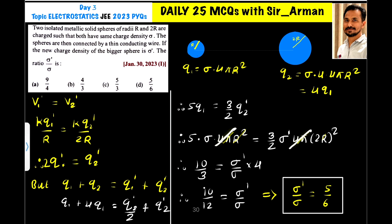This 4π will get cancelled here. Sigma dash as it is, this sigma I am bringing towards right side, so it is sigma dash by sigma. And here 2 into 2 means 2² is 4. Now we are remaining with 10 by 3 equals sigma dash by sigma into 4.